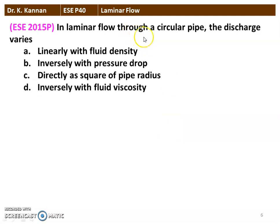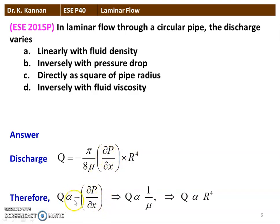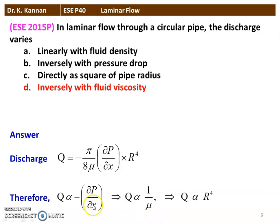The next question from the 2015 question paper: in laminar flow through a circular pipe, the discharge varies — there are four options: linearly with the fluid density; inversely with the pressure drop; directly as the square of the pipe radius; or inversely with the fluid viscosity. Using Q = −(π/8μ)(∂p/∂x)r⁴, Q is proportional to 1/μ — inversely with the fluid viscosity. The statement 'inversely with pressure drop' is not correct, and 'directly as square of pipe radius' is also not correct since Q ∝ r⁴. The only correct statement is Q varies inversely with the fluid viscosity.